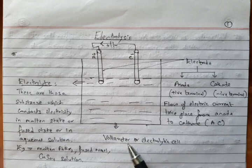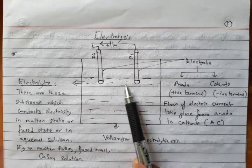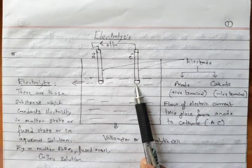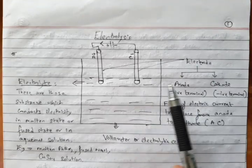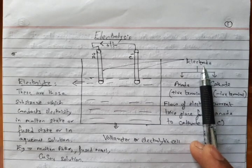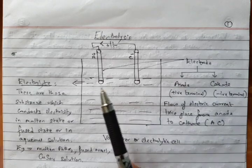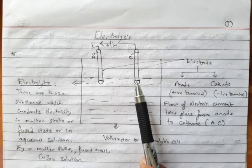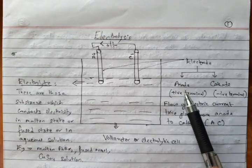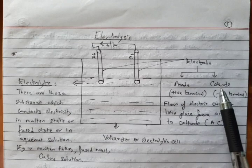In this apparatus, we dip two rods inside the vessel and those two rods are referred to as electrodes. Electrodes are the rods through which electric current passes. This rod is of two types: one is called anode and the other is called cathode.